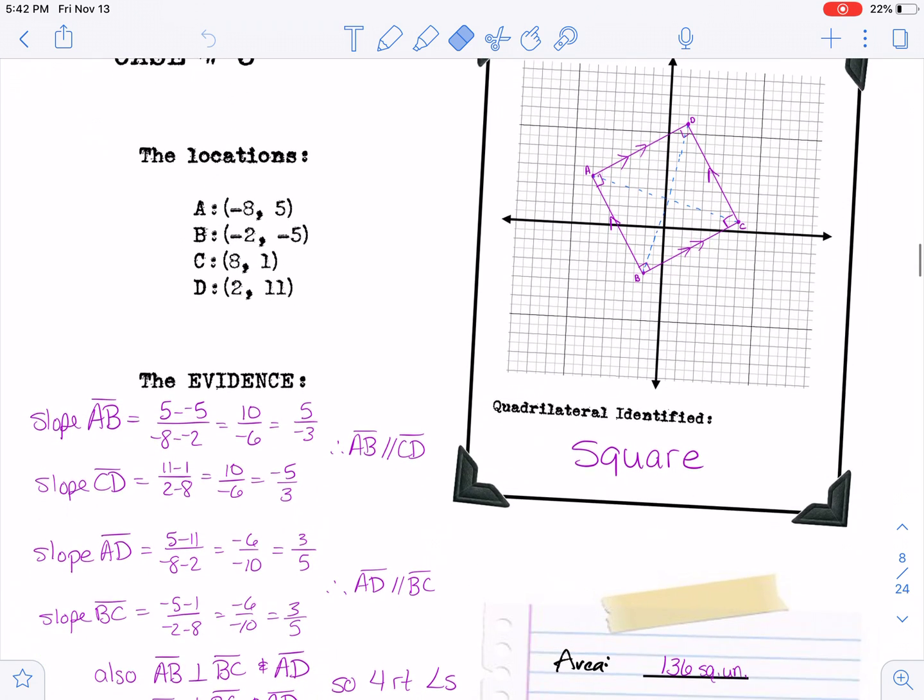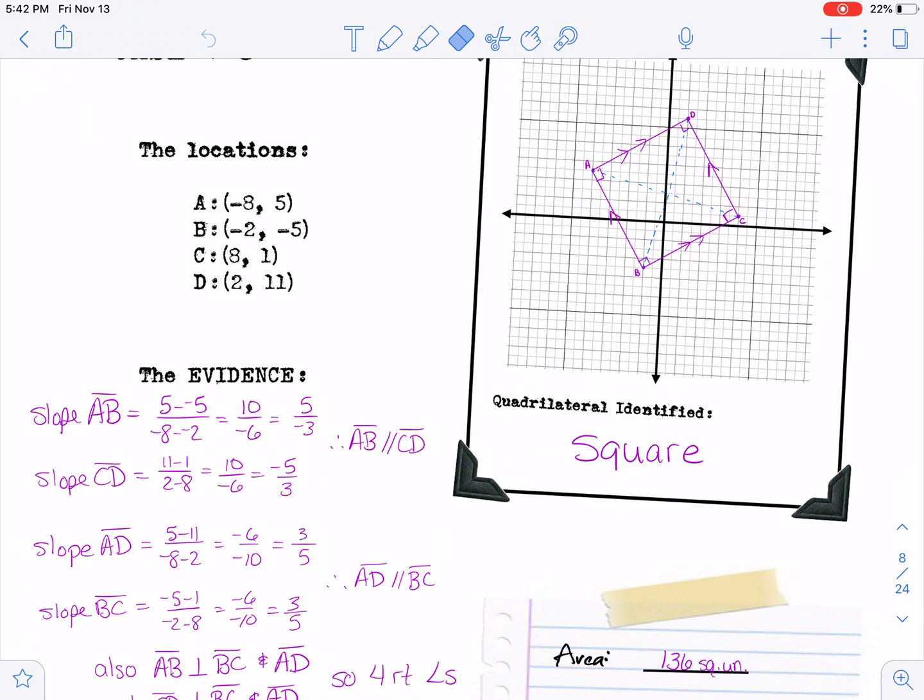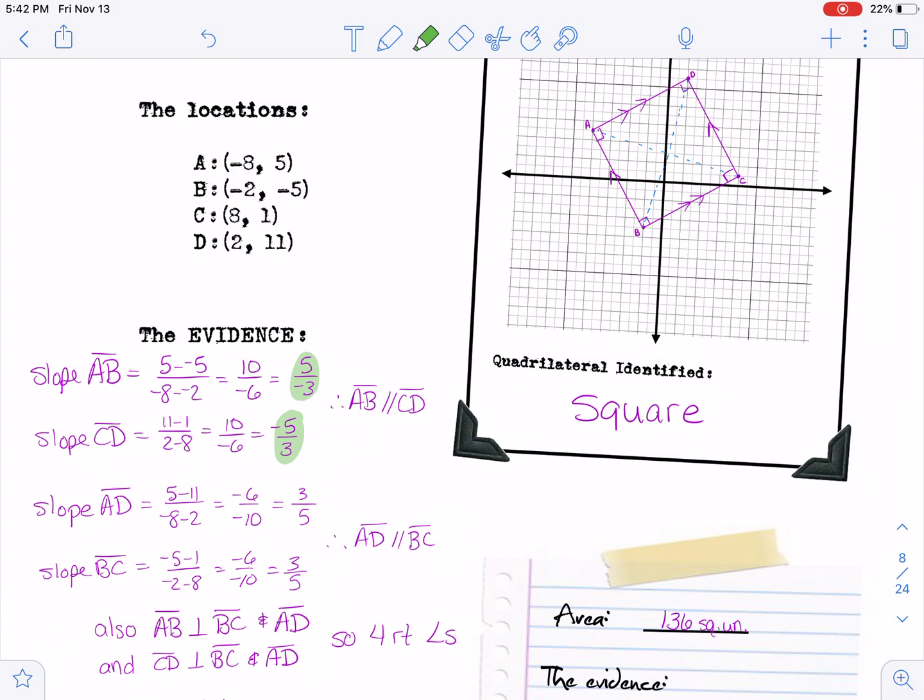So here are the slopes for the four different sides. You can see that these two are parallel, so AB is parallel to CD and then also these two are parallel, so AD is parallel to BC.